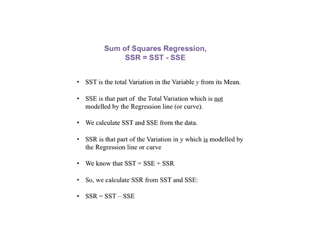The sum of squares regression, SSR, equals SST minus SSE. The sum of squares total, SST, is the total variation in the variable y from its mean. Sum of squares error, SSE, is that part of the total variation which is not modeled by the regression line or curve. SST and SSE are calculated from the data, as shown on the previous slides. And then sum of squares regression, SSR, is that part of the variation in y which is modeled by the regression line or curve. By definition we know that SST equals SSE plus SSR. So we calculate SSR from SST and SSE. SSR equals SST minus SSE.